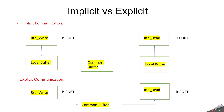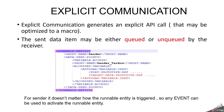This is one of the most important interview questions for those trying to get a job in the automotive industry — what is the difference between implicit and explicit, and how you can design a runnable. Explicit communication generates an explicit API call that may be optimized to a macro. The send data item may be either queued or unqueued by the receiver. For the sender, it doesn't matter how the runnable entity is triggered, so any event can be used to activate the runnable entity. When you want to send data, you use data send points, specifying variable access and the port prototype reference.